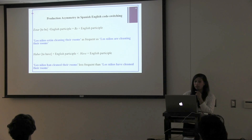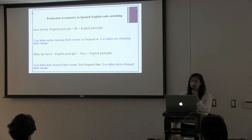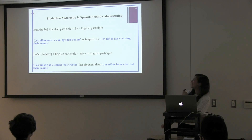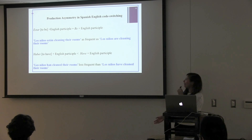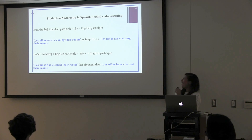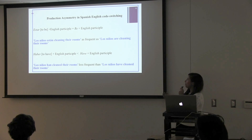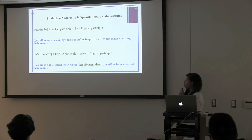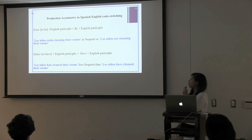Several studies examining the production of Spanish-English code switches have documented a production asymmetry involving alternations within the auxiliary phrase. For example, 'estar' — to be — plus the English participle would be equally as frequently said as 'be' in English plus the English participle. 'Los niños están cleaning their rooms' would be just as frequent as 'los niños are cleaning their rooms.' But on the other hand, it would be more infrequent to have 'haber' — the verb to have in Spanish — plus English participle than 'have' plus English participle. For example, 'los niños [han] cleaned their rooms' would be less frequent than 'los niños have cleaned their rooms.'